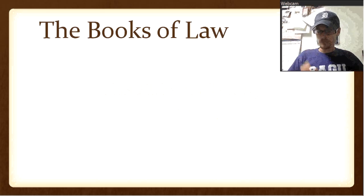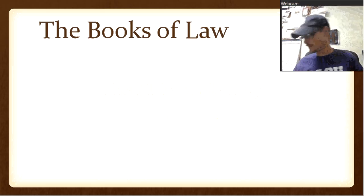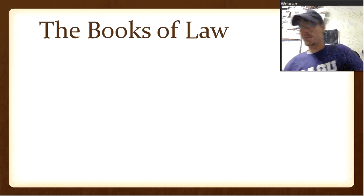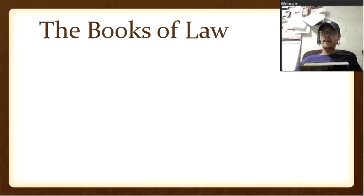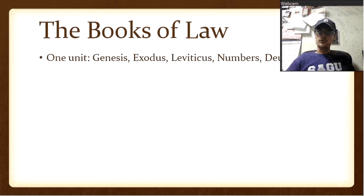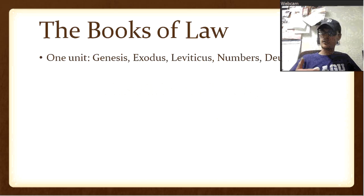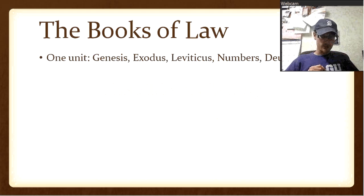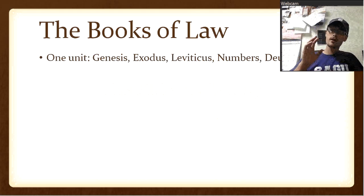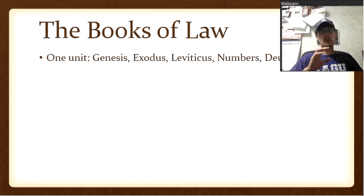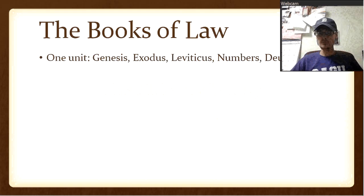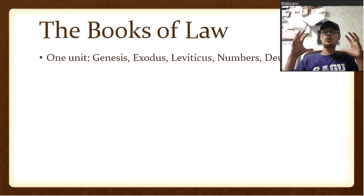The books of the law are the first five books in your Bible: Genesis, Exodus, Leviticus, Numbers, and Deuteronomy. A lot of people see these books as very different from each other, but they are very much one unit.